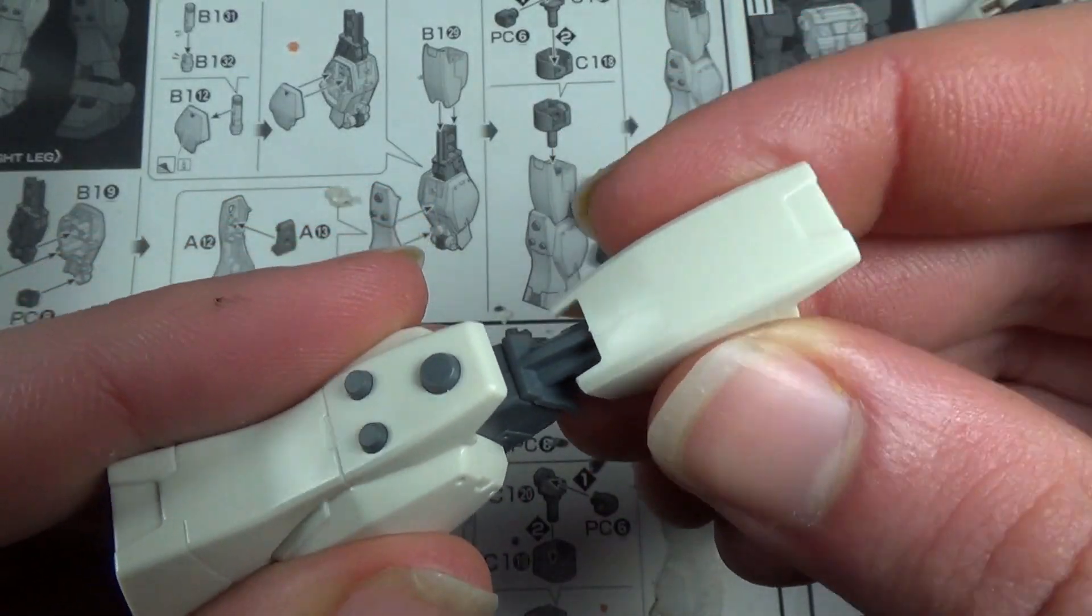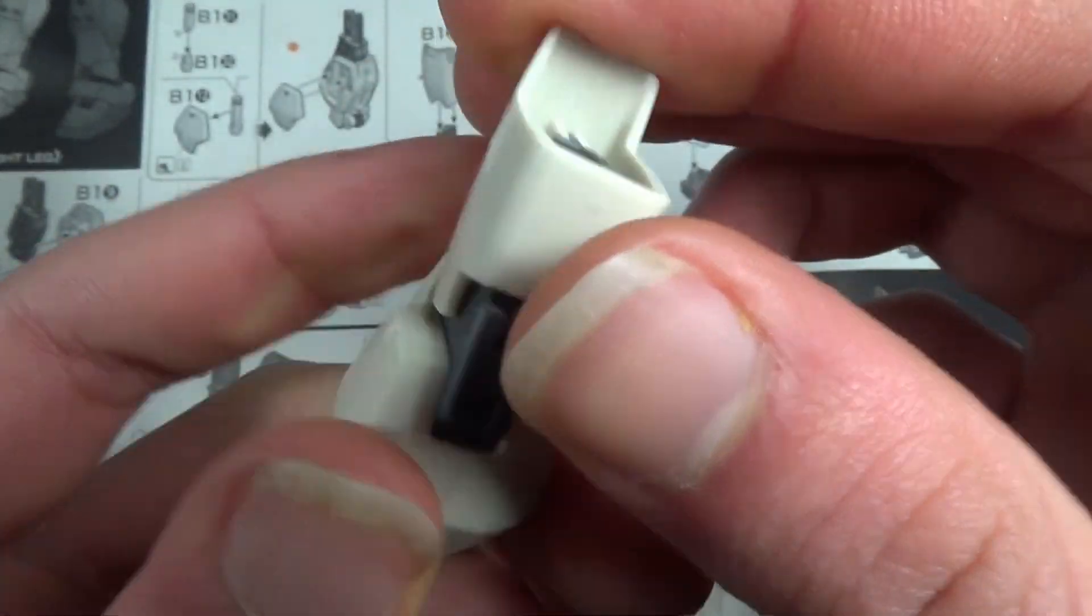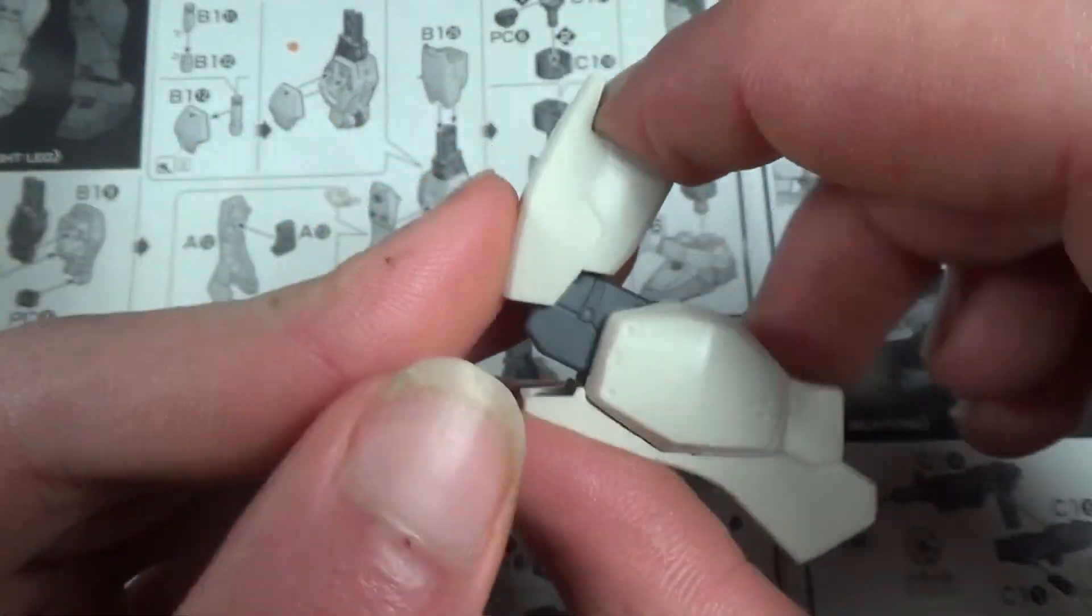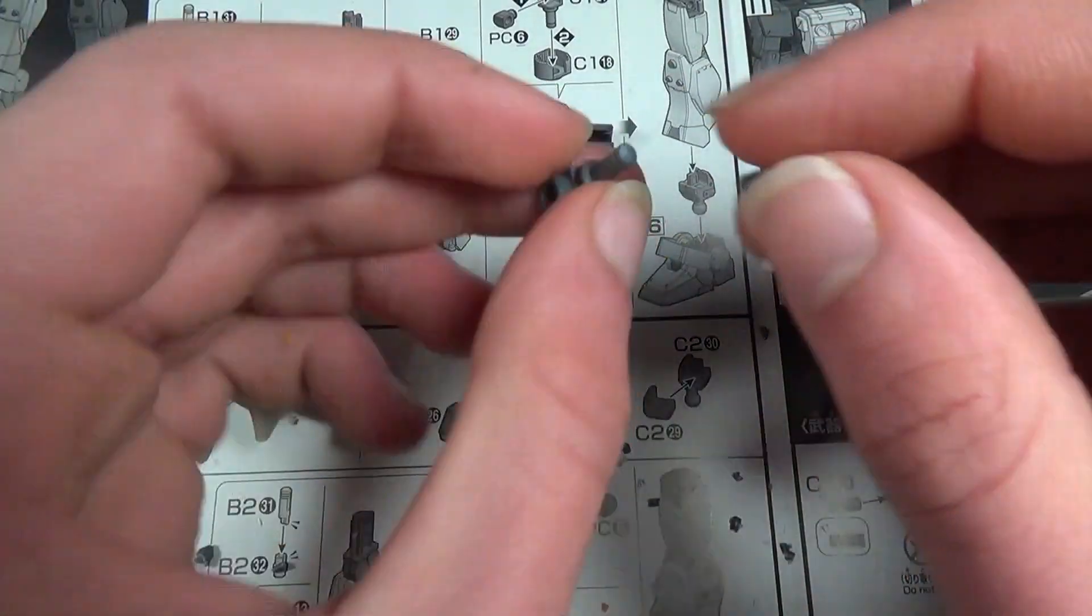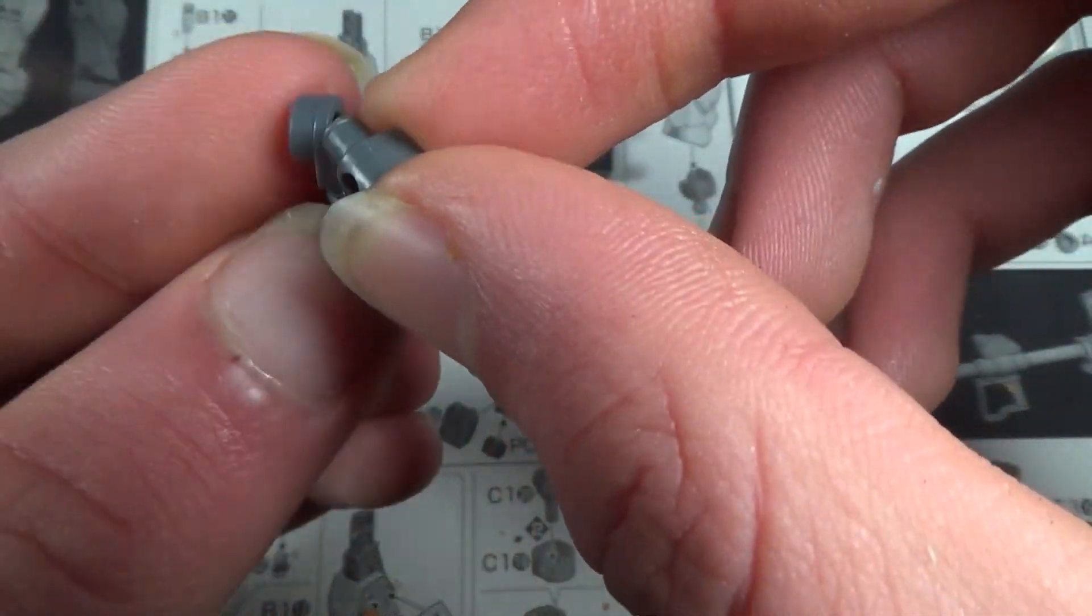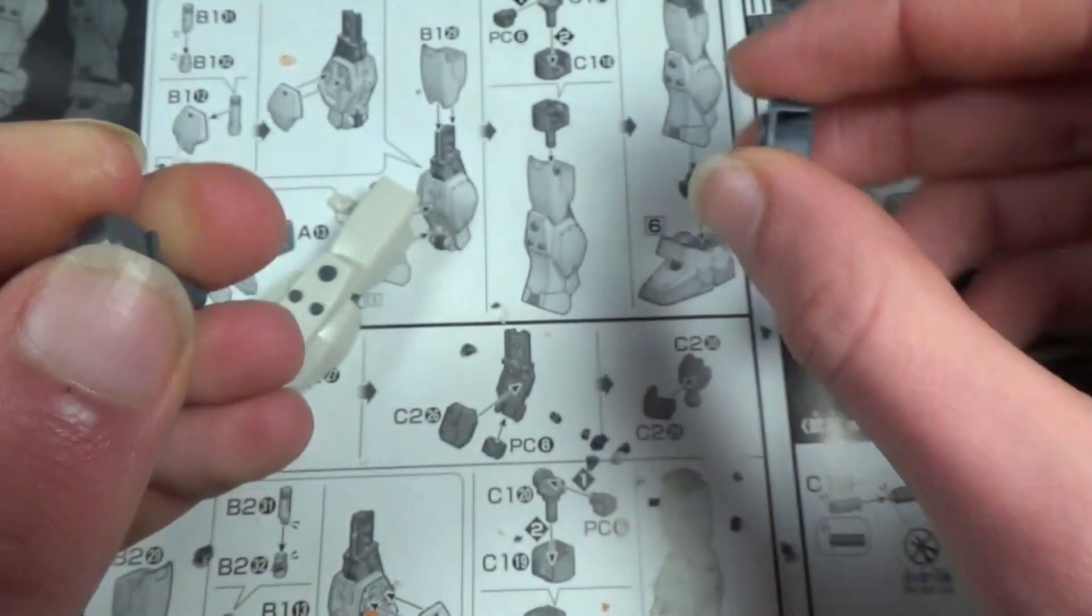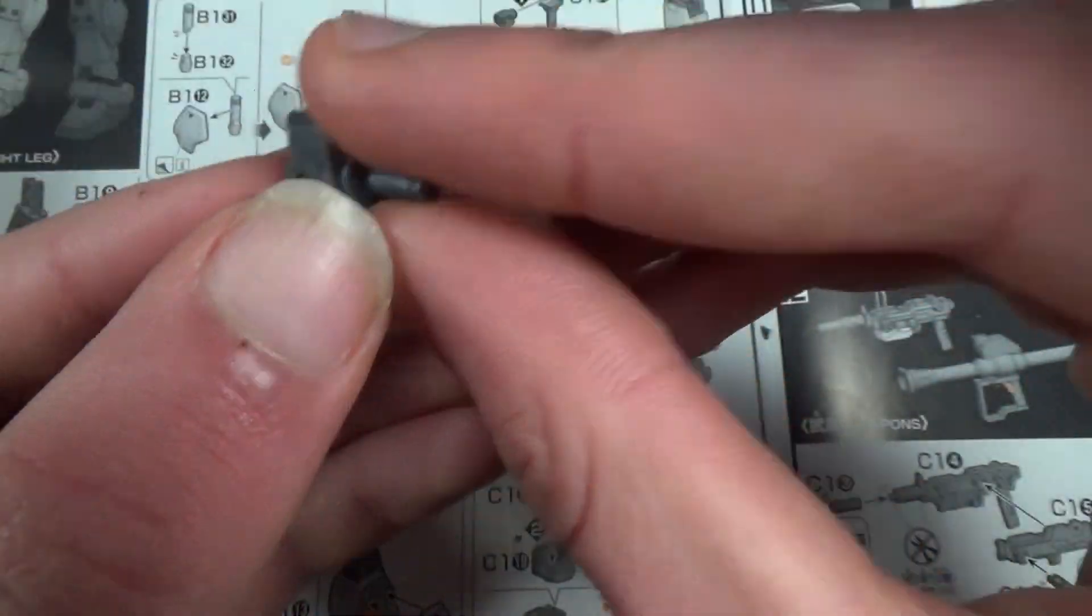So now we're just going to take the thigh armor and slide it over the leg frame, which is a very familiar action if you've built pretty much any of the high grade Universal Century kits from the last couple years since this seems to be the direction they're going with the leg builds. And they're actually pretty much all the newer high grades are built the same way now, which I'm not really complaining about. It makes them a little more intuitive to build, and it's not a bad body design at all, so I'm not complaining.